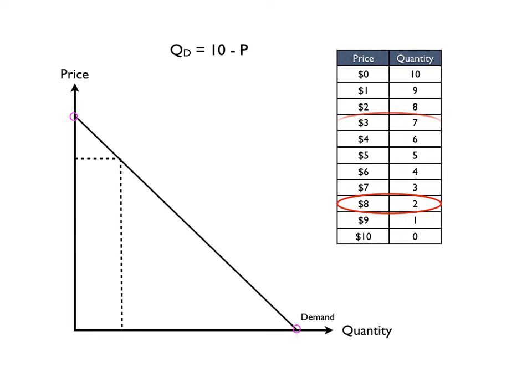At a price of $8, two units will be consumed. And again at a price of $3, seven units will be consumed. This is movement along the demand curve. What this model is trying to tell us is how many units people are willing to buy of whatever good this is at different prices. So at $8 they're willing to buy two, at $3 they're willing to buy seven units.